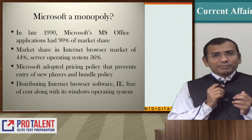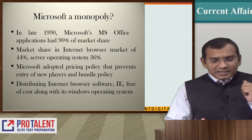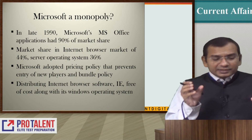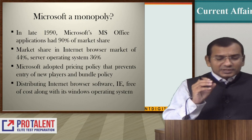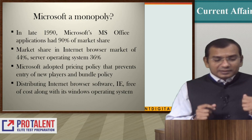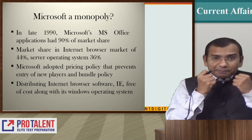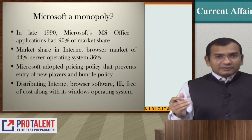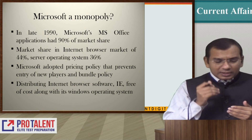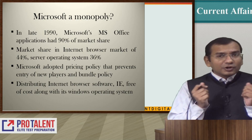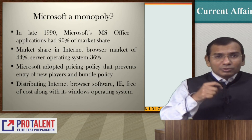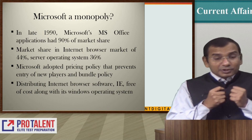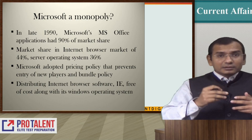There was an earlier case of Microsoft. In the late 1990s, Microsoft's MS Office had 90% market share, while their internet browser had only 44% and their operating system had only 36% market share. So they adopted a pricing policy that prevented entry of new players — if you purchased MS Office, they gave you Internet Explorer and the Windows operating system free of cost. Thereby, people would not go to a new browser or purchase a new operating system.